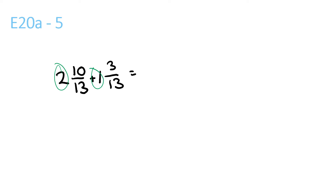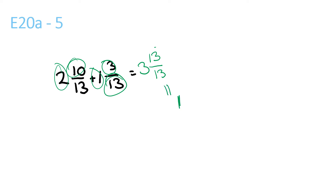2 plus 1 is 3. 10 plus 3 is 13 over 13, because the bottom stays the same. 13 and 13 are both the same, so it's equal to 1. Then 3 plus 1 is equal to 4.